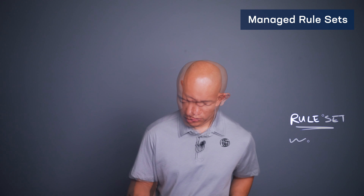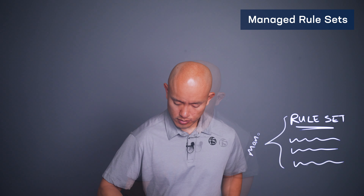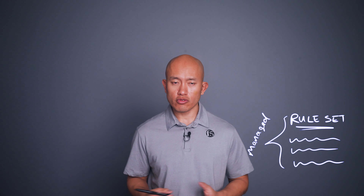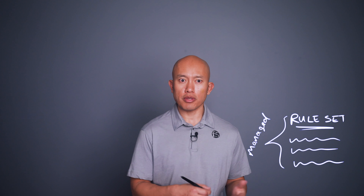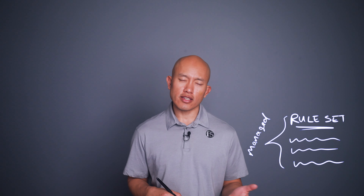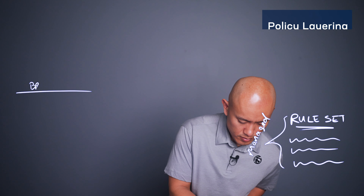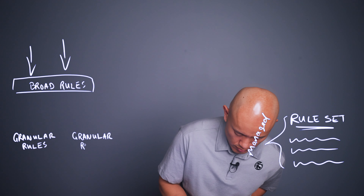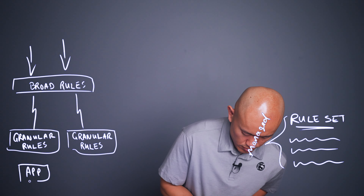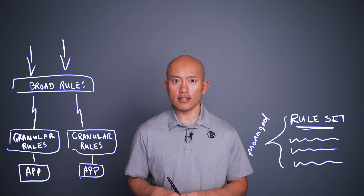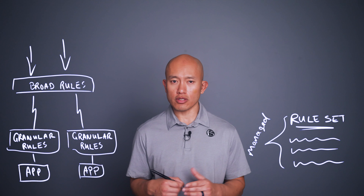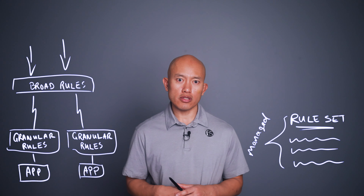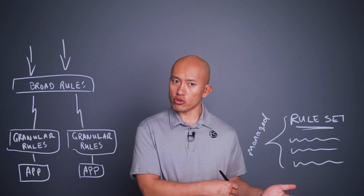Another way a WAAP solution helps is through managed rule sets and policy layering. With a managed rule set, you can rest assured that the appropriate protections will be in place for the appropriate web applications or API technologies, as the rule set is taken care of by security experts. Policy layering allows you to divide and conquer your security — you can have broader policies deployed across all applications in your estate, perhaps set by the global security team, while app-specific teams manage a more granular policy applied just to their microservice.